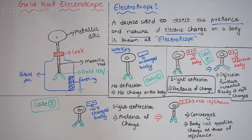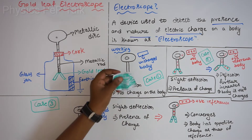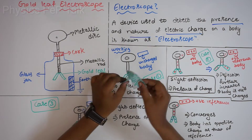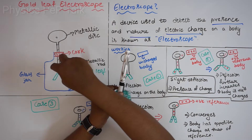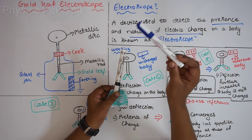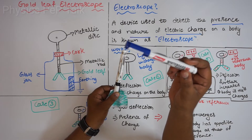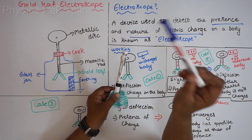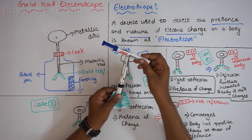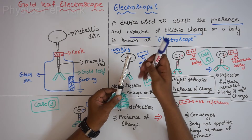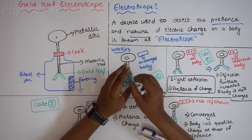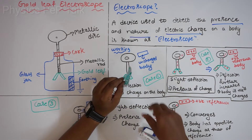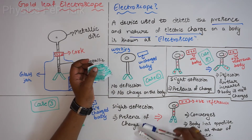Let us see the working of the gold leaf electroscope. Consider a paper as the gold leaf — it has two faces, connected to a metallic rod, with a metallic disc at one end. Now I will bring an uncharged body and touch it. Since this is uncharged, there is no transfer of electrons. As a result, the gold leaf remains undeflected. No deflection means that this body is uncharged.